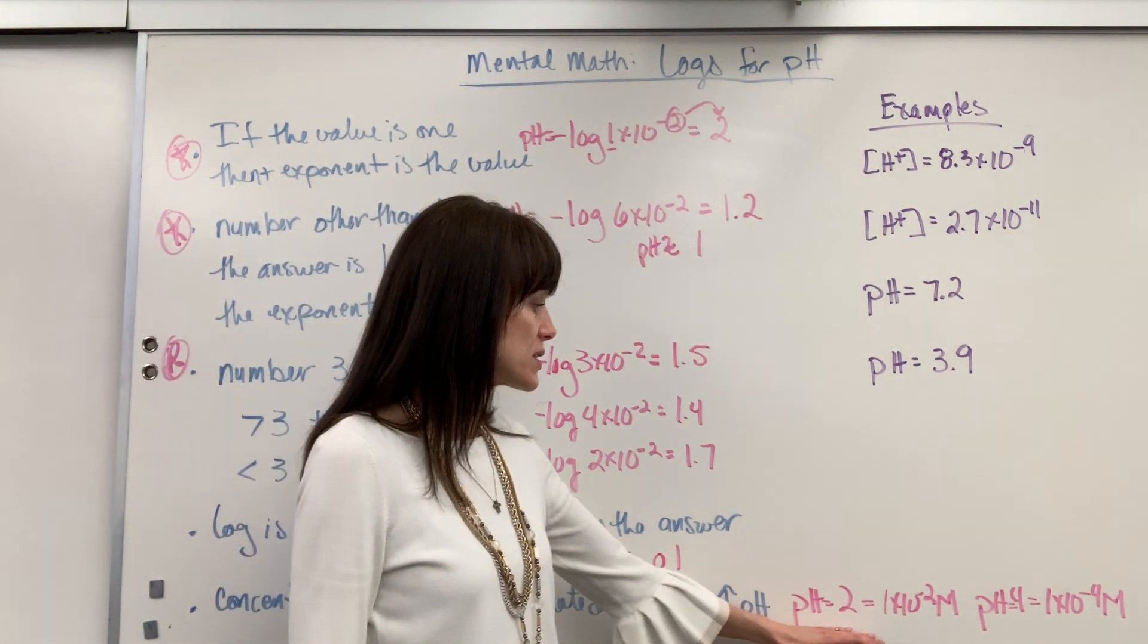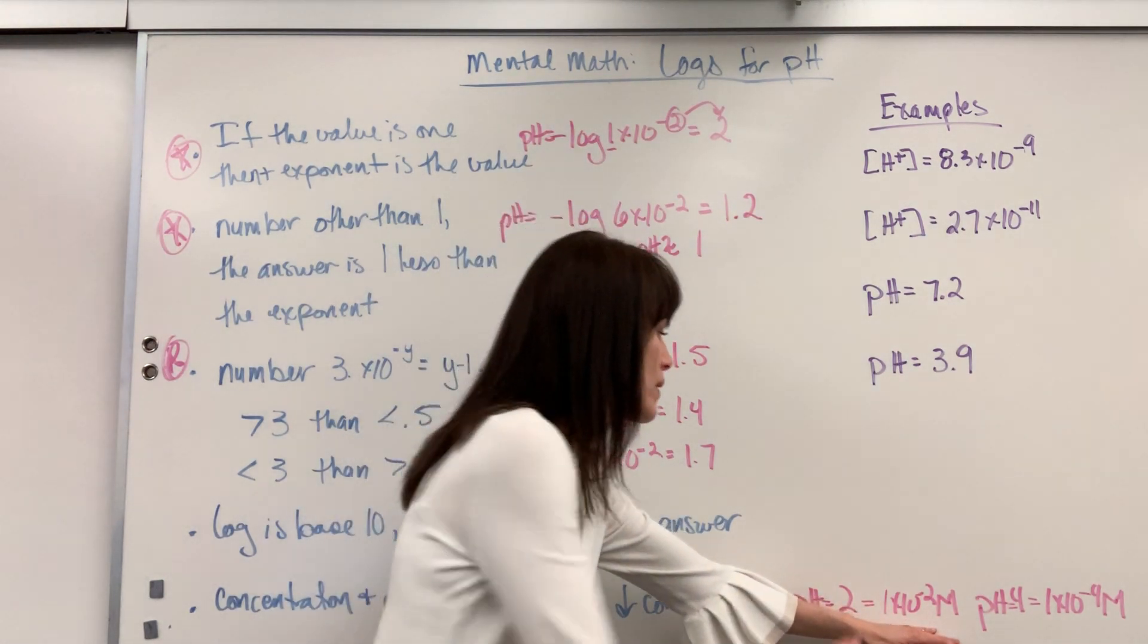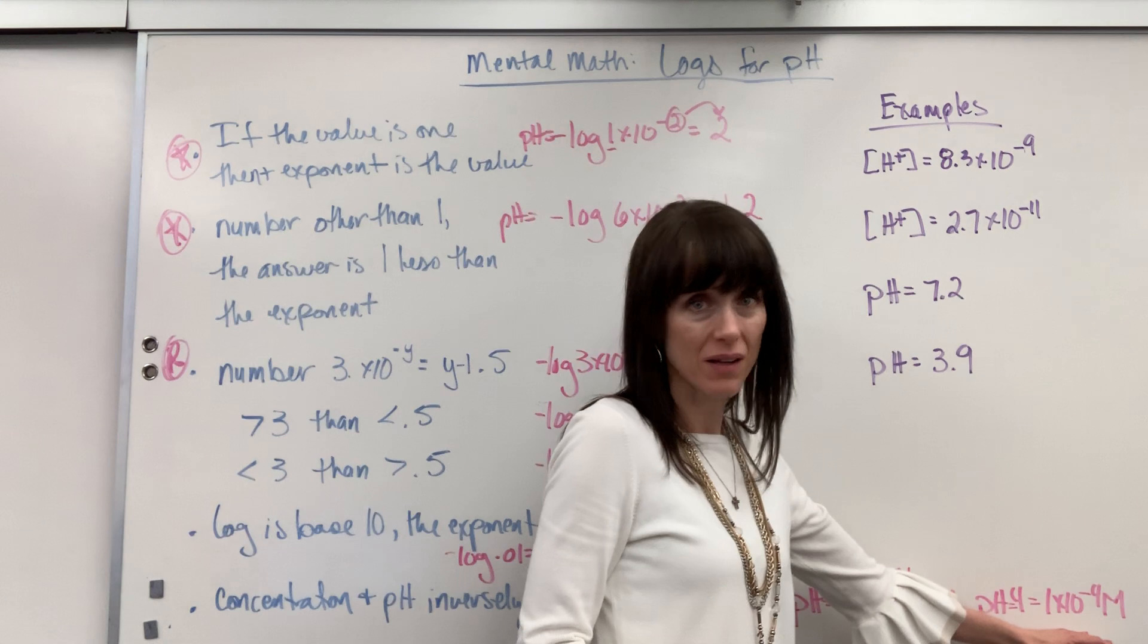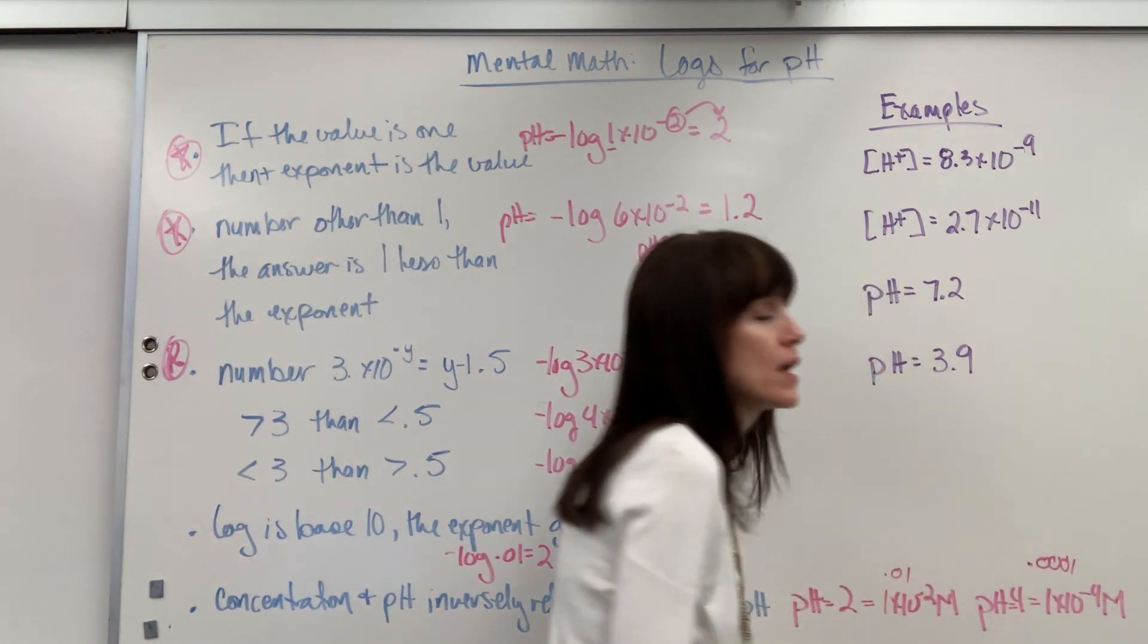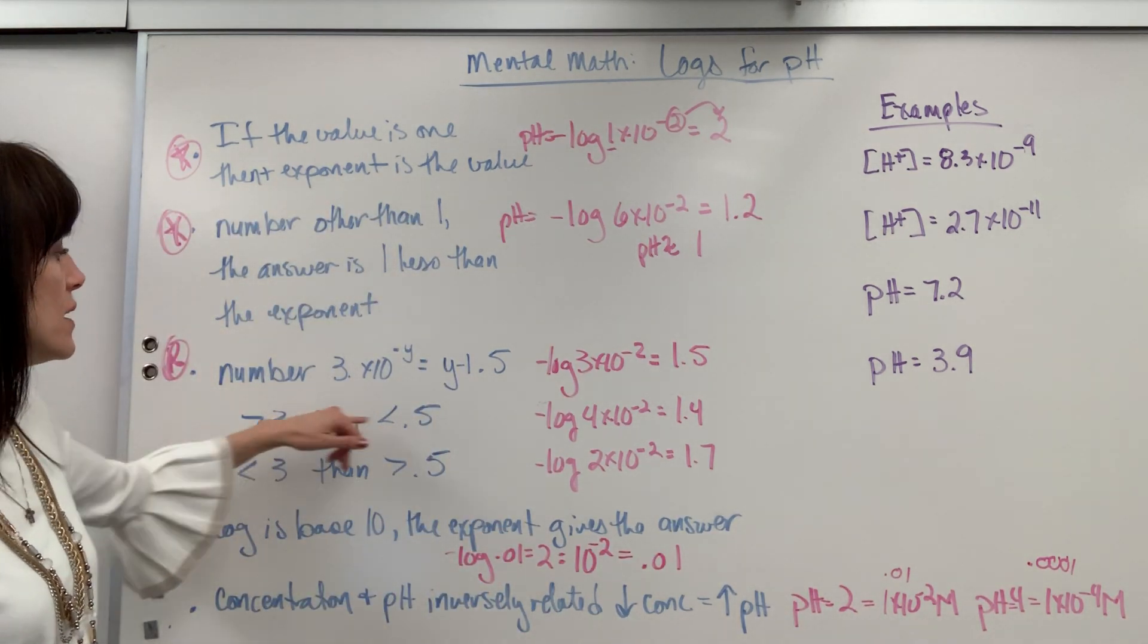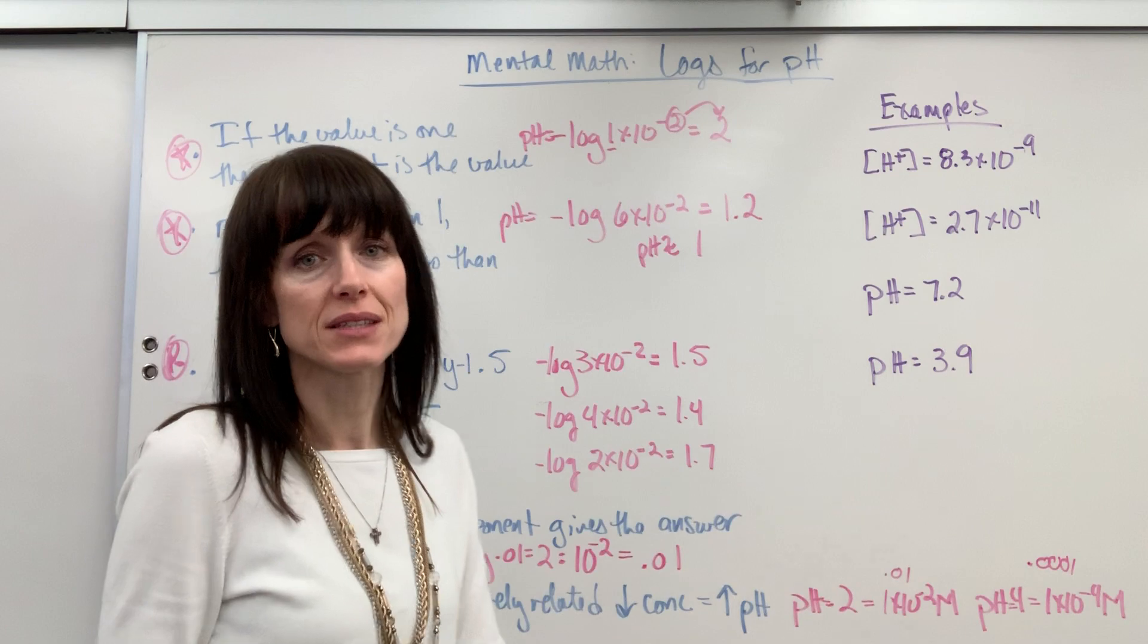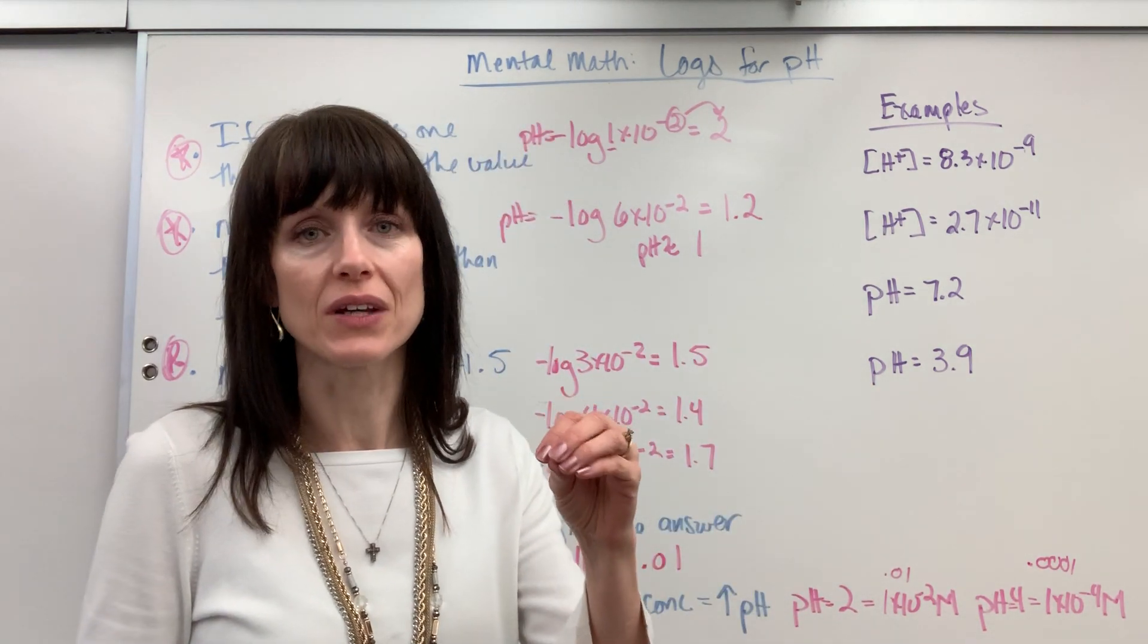Other thing that I want you to know, concentration of pH are inversely related. And it's a function of logs. If I've got a low pH, like a pH of 2, the concentration is high. It's going to be 0.01, 1 times 10 to the minus 2. But if I have a higher pH, a pH of 4, the concentration is smaller. 1 times 10 to the minus 4, which would be 0.0001. So they're inversely related. That's why here, if you have a number greater than 3, the tenth place is less than 0.5. If you have a number less than 3, the tenth place is greater than 0.5.